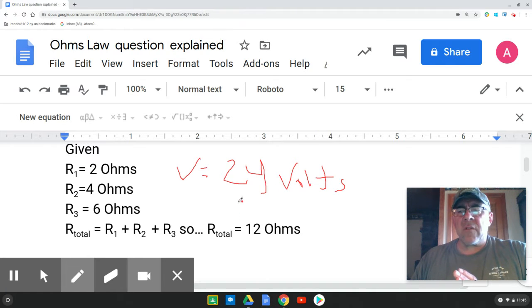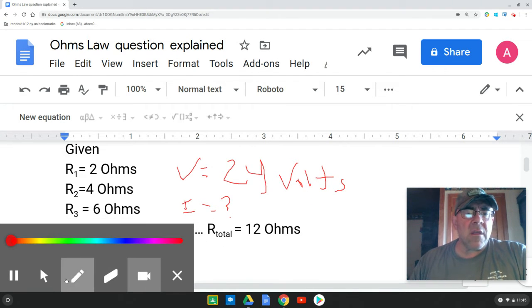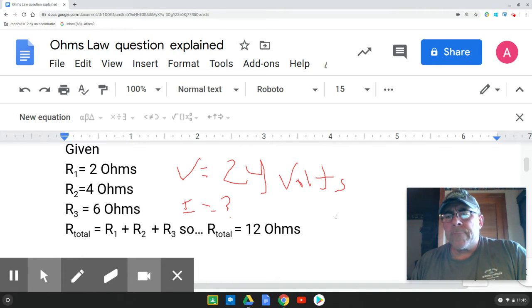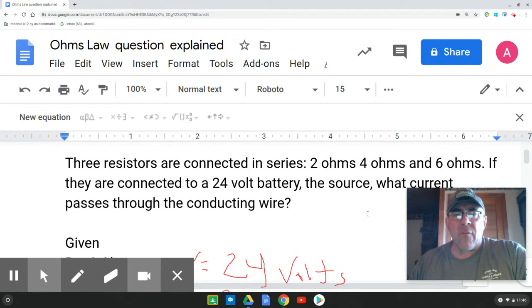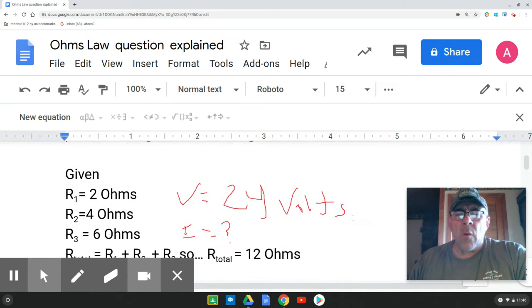So what did they want us to find? The current. And current I is our unknown. So then we should ask ourselves the question, is there a formula that solves for I? Well, yeah. I equals Q divided by T. I equals the current divided by the total charge divided by the time that that takes for one coulomb to pass by. Do I have any of that information? I don't. I don't have any of that information.